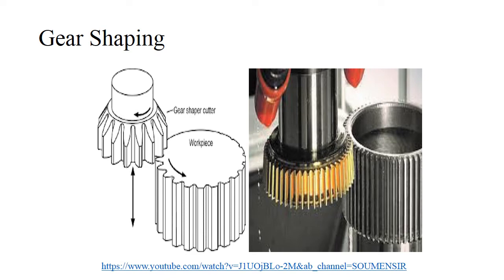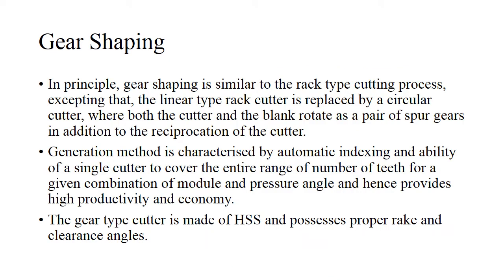The teeth over here generate profiles based on the cutter. You can also see the image of a gear work piece with a gear shape cutter. This cutter is basically similar to a rack type cutter, but here it is circular in shape. It rotates and the work piece also rotates, so when both rotate, all these profiles of gear teeth are being formed. Please go through the YouTube link as well in order to understand this process better.